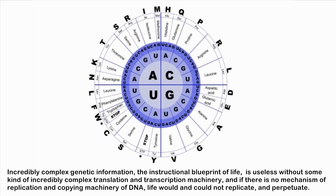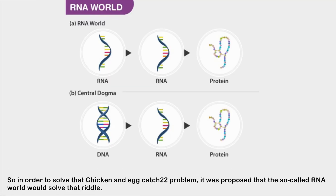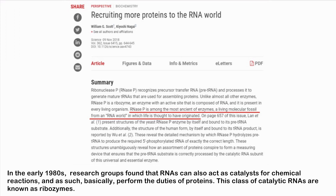Incredibly complex genetic information — the instructional blueprint of life — is useless without some kind of incredibly complex translation and transcription machinery. And if there is no mechanism of replication and copy machinery of DNA, life would not and could not replicate and perpetuate. So in order to solve that chicken-and-egg catch-22 problem, it was proposed that the so-called RNA world would solve that riddle. In the early 1980s, research groups found that RNAs can also act as catalysts for chemical reactions, performing the duties of proteins. This class of catalytic RNAs are known as ribozymes.